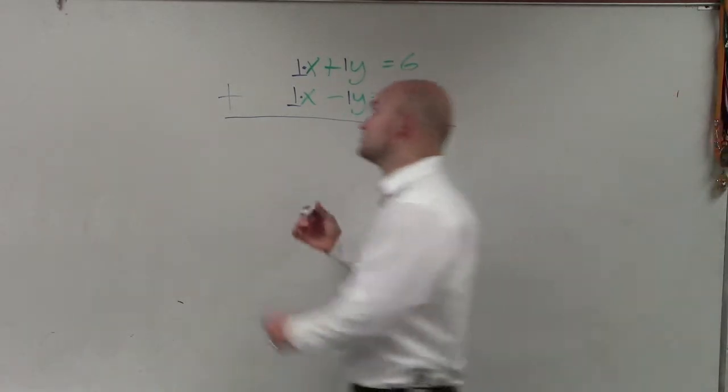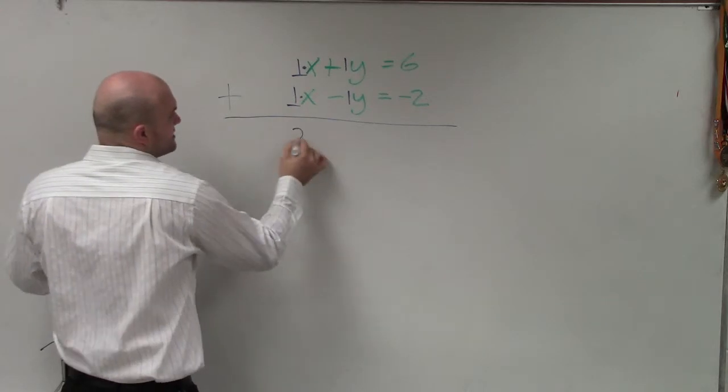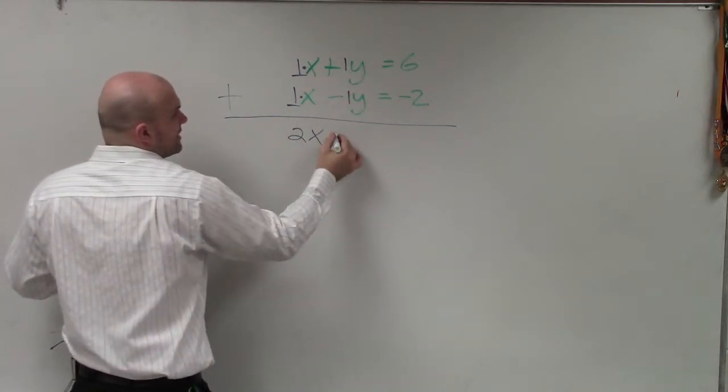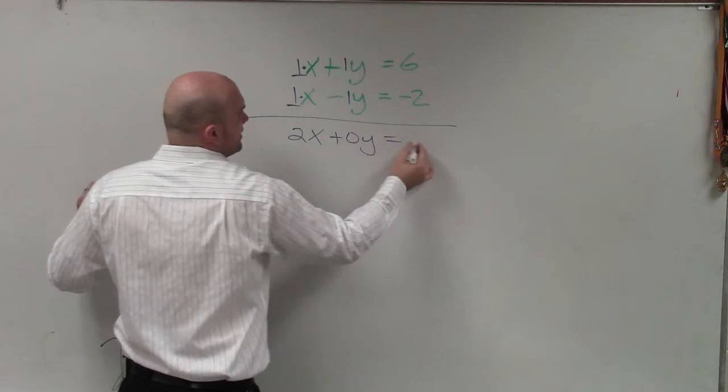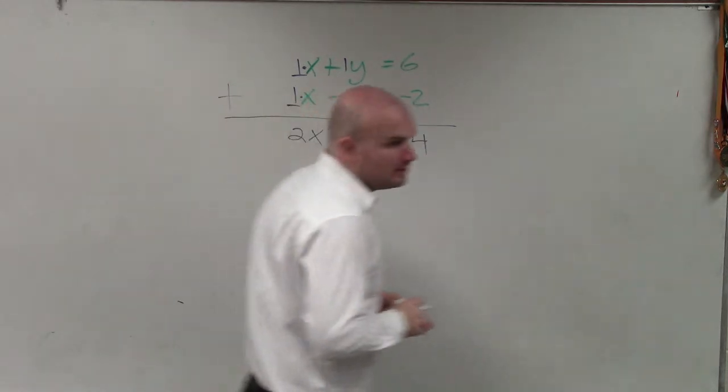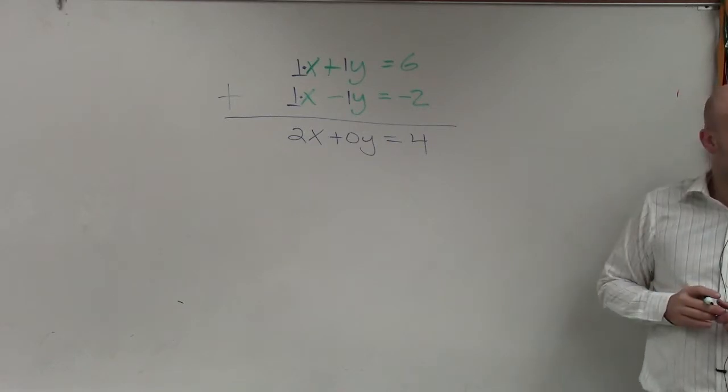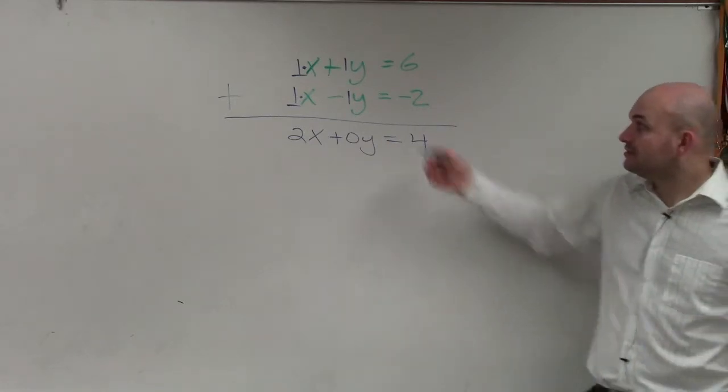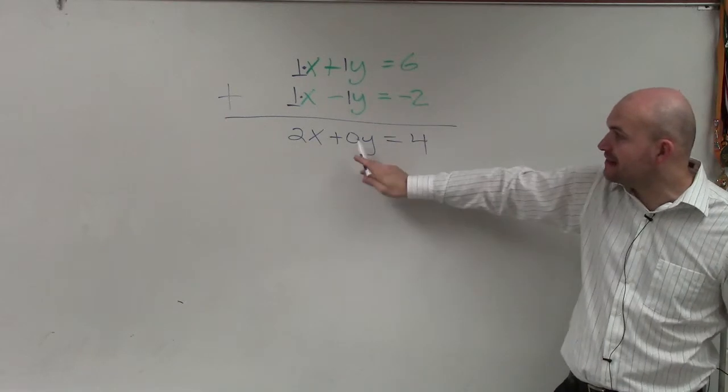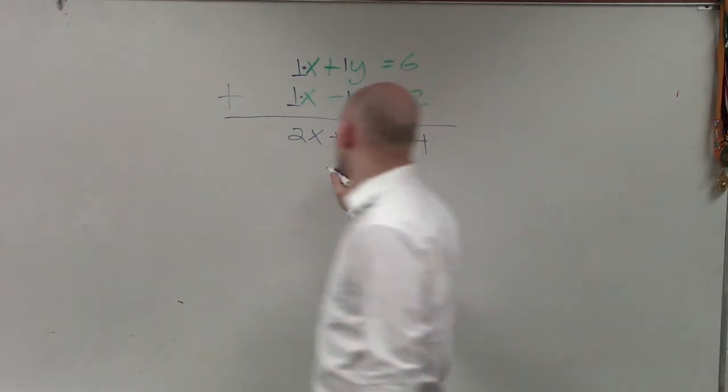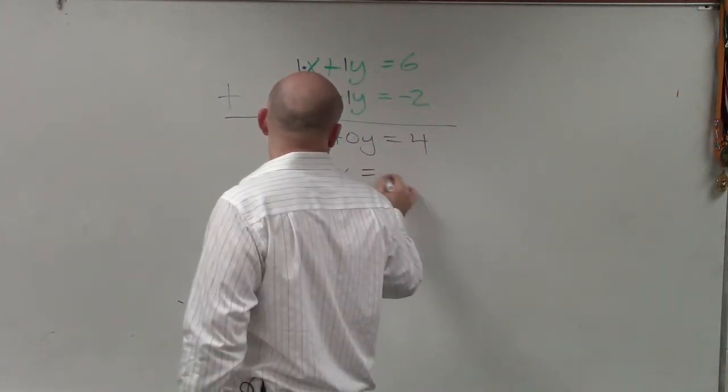Now, when I add the equations, watch what happens. 1x plus 1x is 2x. 1y plus negative 1y is 0y equals 4. Does everybody see what I did and how I got that? By adding them, since they had the same, one was positive, one was negative, I now got to 0y, which now produces just 0.